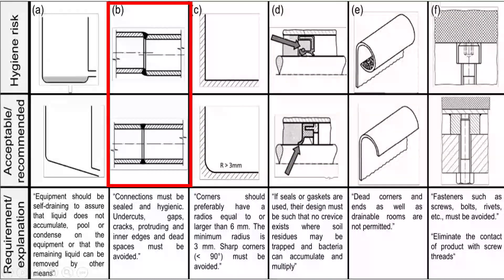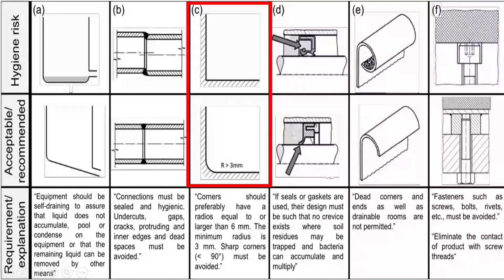When merging two points on equipment, you need to make sure there are no gaps, otherwise debris or food can accumulate at those junctions. The third point concerns walls and equipment corners — you need to avoid sharp corners. Corners should be rounded so that dirt does not accumulate and surfaces can be cleaned easily. Sharp corners are very hard to clean and require much more effort.